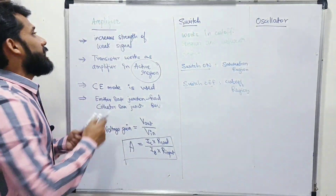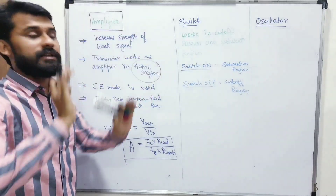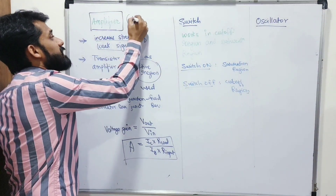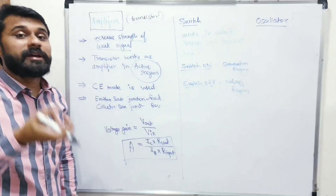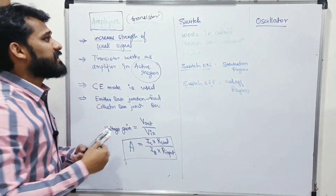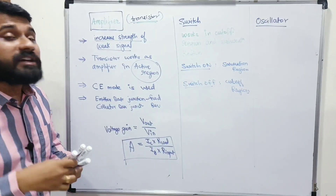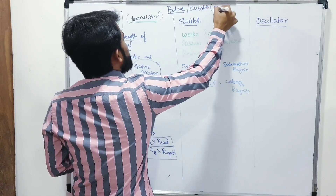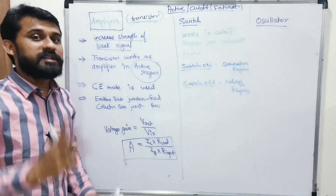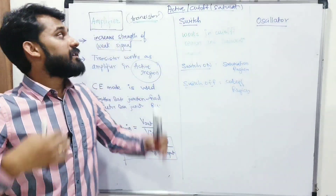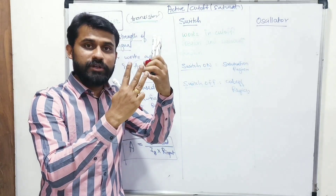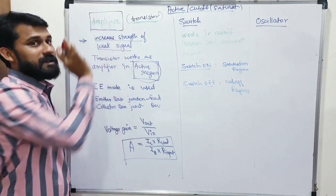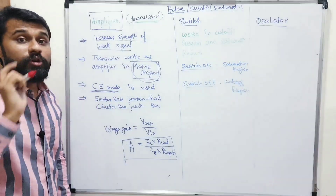An amplifier is something which amplifies a signal — it increases the strength of a weak signal. The transistor is used inside an amplifier — it is the transistor's application. Every transistor works in three different regions: active, cut-off, and saturation. For an amplifier, the transistor must be used in the active region. It should be connected in common emitter mode.